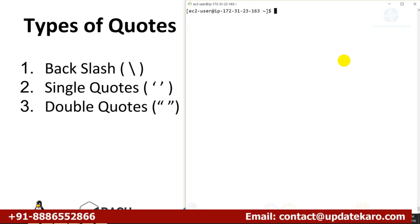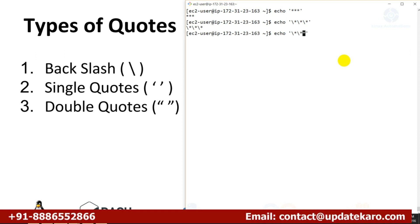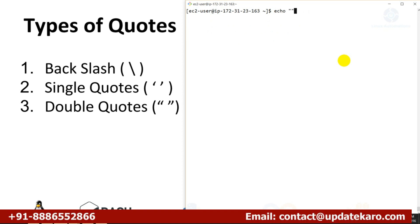Double quotes provide another way of nullifying the speciality of special characters. There is a slight difference between single quotes and double quotes. In single quotes, special characters are printed because single quotes escape each and every special character using backslash internally — that's why even a backslash gets printed. In double quotes, almost all characters are backslashed other than the dollar sign ($) and the backtick — only these two characters are treated as special characters in double quotes.